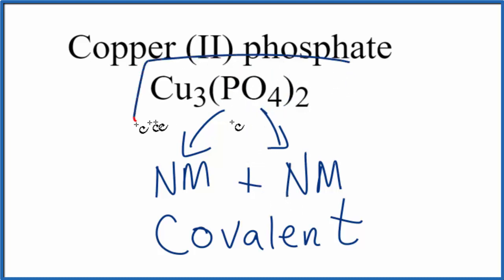But overall, the bond between the positive copper(II) ions and the negative phosphate ions, that will be an ionic bond.